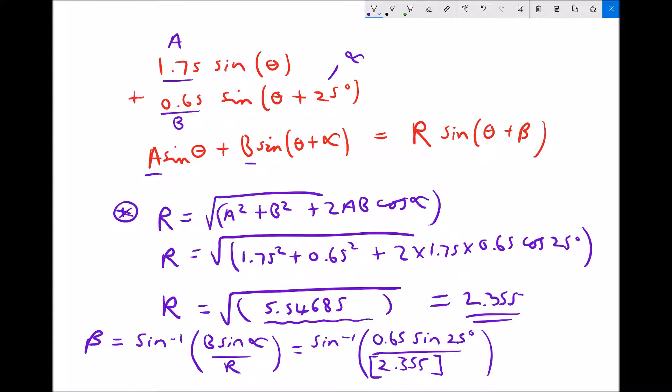So instead of 2.355 on the bottom of that fraction, my full calculator answer reads 2.355... I'm just doing everything I can to eliminate any rounding errors. Now that's going to give me 6.698°.